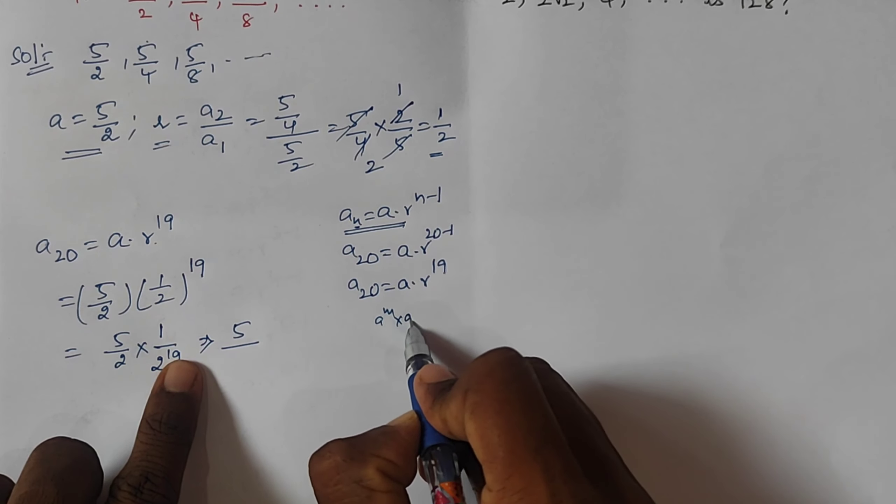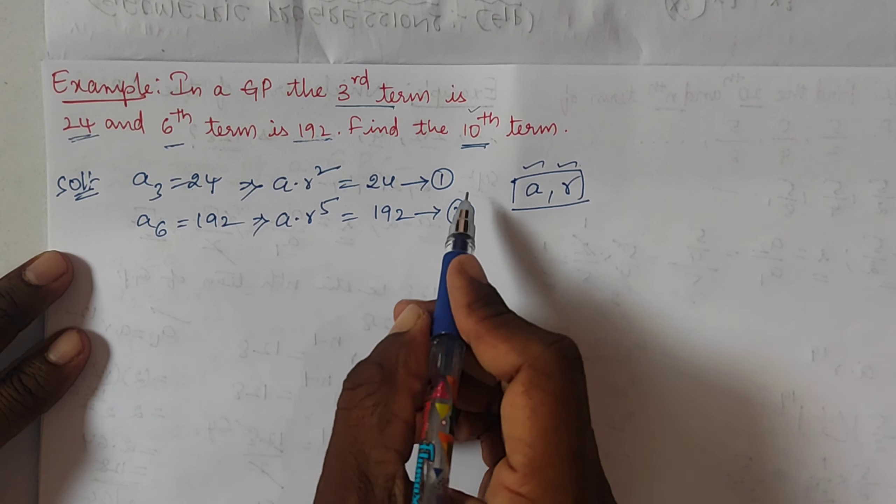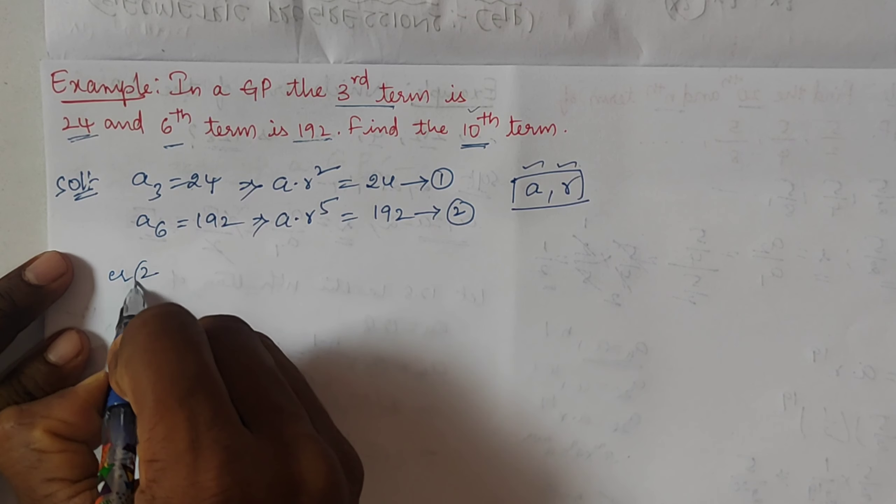Example C: In a GP, the 3rd term is 24 and the 6th term is 192. Find the 10th term. Given: a₃ = 24, so a·r² = 24 (equation 1). And a₆ = 192, so a·r⁵ = 192 (equation 2). To find a and r, we divide equation 2 by equation 1.